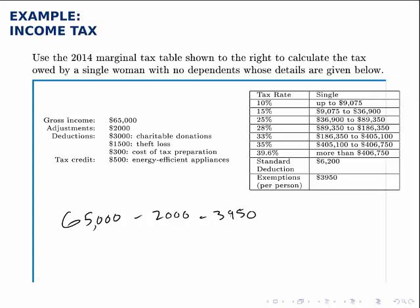So we've subtracted off exemptions and adjustments, and now finally we subtract off deductions. The biggest mistake here is just subtracting off the three itemized deductions right away. Notice that the three deductions together only add up to $4,800, but the standard deduction is higher at $6,200. This taxpayer has a choice between the itemized deductions at $4,800 or the standard deduction at $6,200. Because she can choose, she chooses the higher one, since that deducts more, resulting in a smaller taxable income and thus less taxes owed. So she'll subtract off the standard deduction.